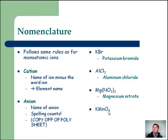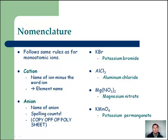KMnO4 — this is potassium permanganate. MnO4 is permanganate; spell it right off the chart. Naming your polys is actually easier than naming binaries because you have the names to copy from the cheat sheet.